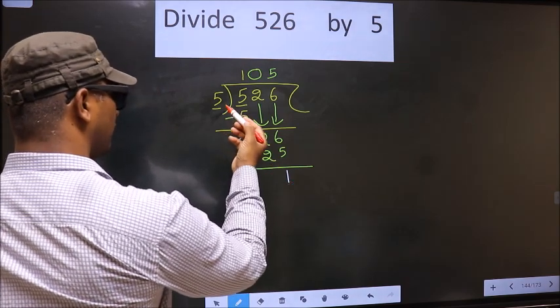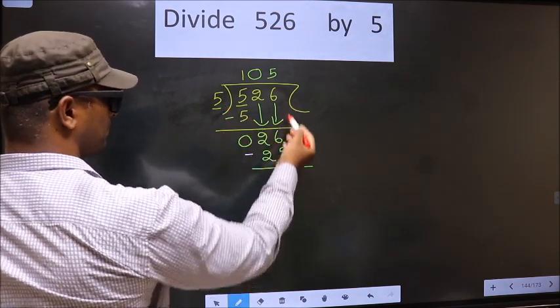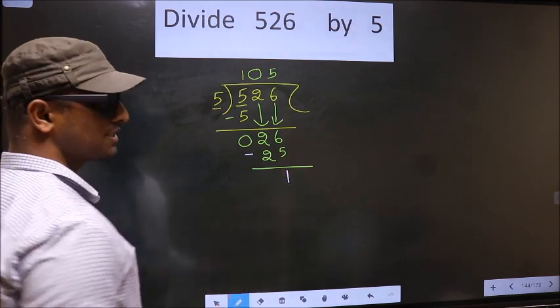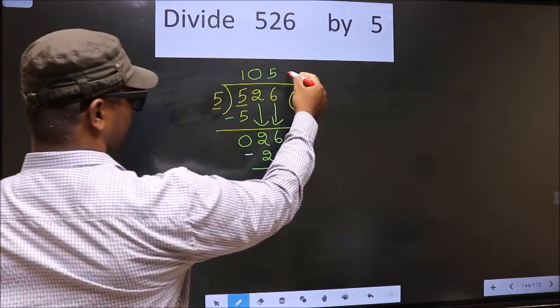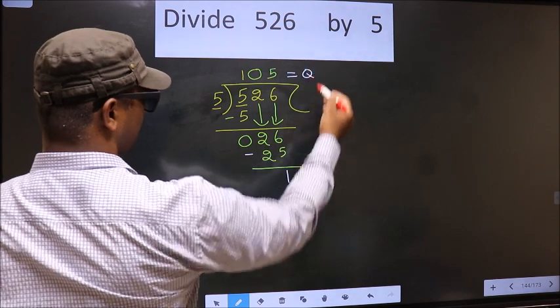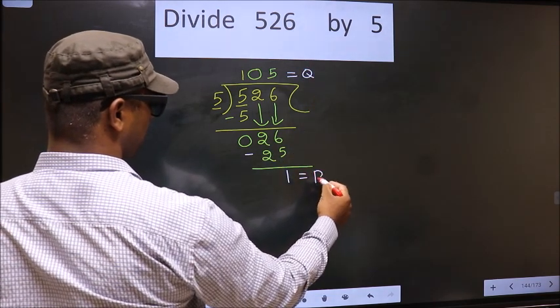1 is smaller than 5. No more numbers to bring down. So this is where we stop. Therefore, this is our quotient and this is our remainder.